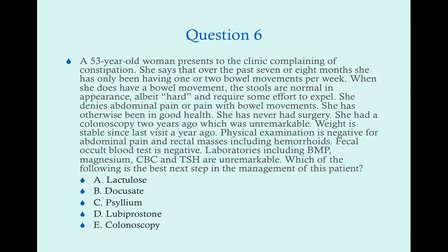Question six: A 53-year-old woman presents complaining of constipation. Over the past seven or eight months she's had only one or two bowel movements per week. When she does go, stools are normal in appearance but hard and require effort. No abdominal pain, no pain with bowel movements. No prior surgery. Colonoscopy two years ago was unremarkable. Weight is stable. Physical exam is negative for abdominal masses and hemorrhoids. Fecal occult blood test is negative. Labs including BMP, magnesium, CBC, and TSH are unremarkable. What is the best next step? A) lactulose, B) docusate, C) psyllium, D) lubiprostone, or E) colonoscopy.